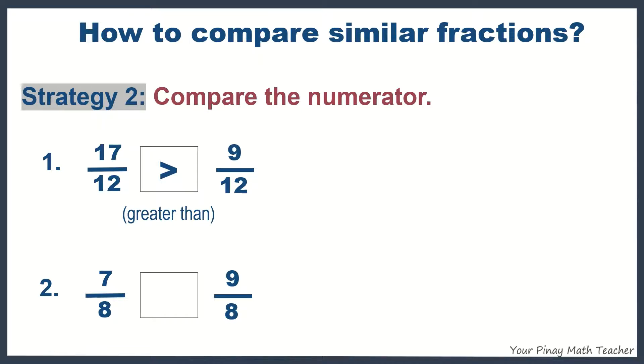Number two, seven is less than nine, so seven-eighths is less than nine-eighths.